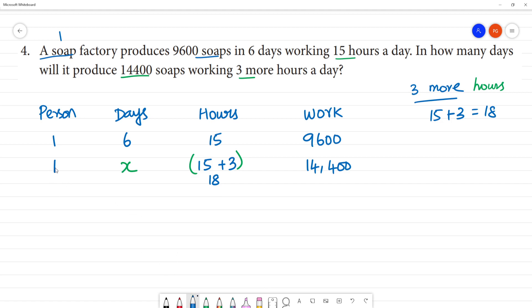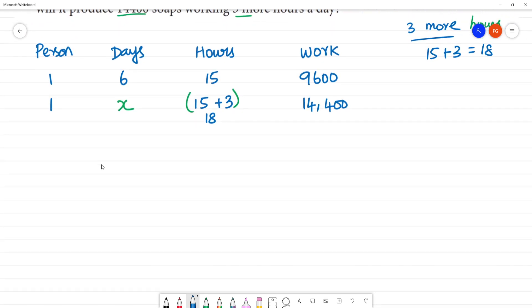Do we know the formula? How do we apply? P1 multiplied by D1 days, multiplied by hours by work. That is equal to P2 multiplied by days multiplied by hours by W2. This is first, this is second - first statement, second statement.